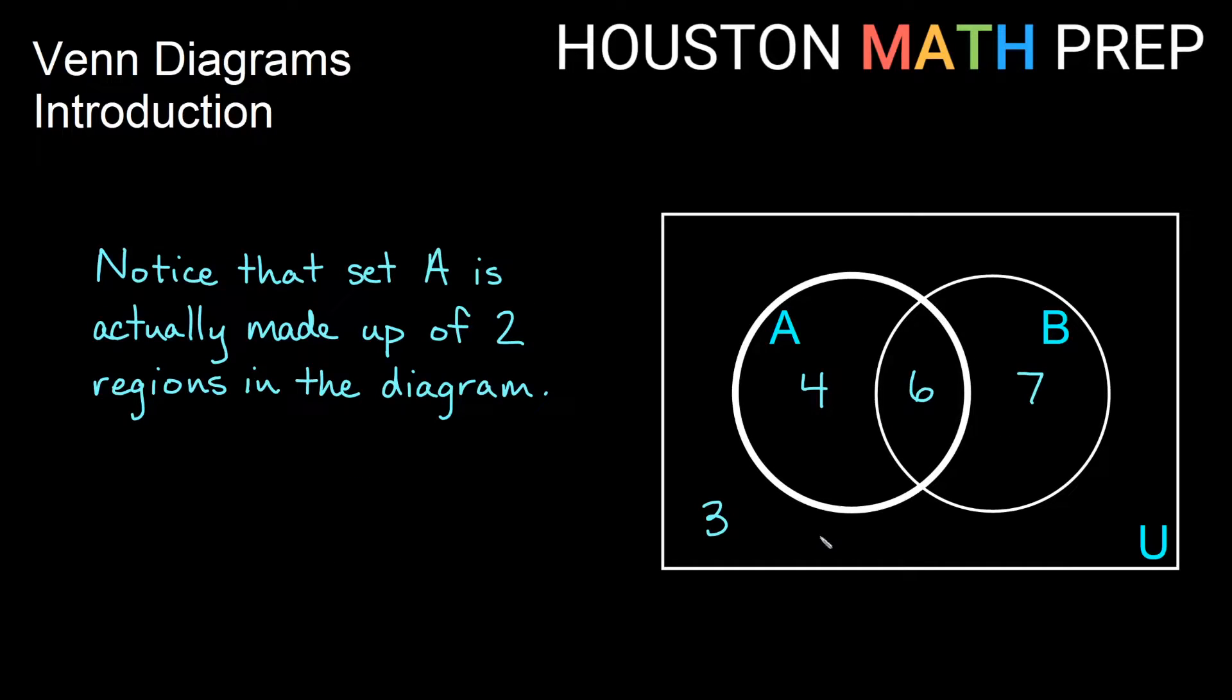So you'll notice the way we've drawn the diagram here, my set A and my set B actually have two regions inside of each circle. So set A has this group of four elements and then it also has this group of six elements that overlaps with B. So if we're looking at the total number of elements in set A, then we would add the four and the six and the total number of elements in A is actually 10 elements.